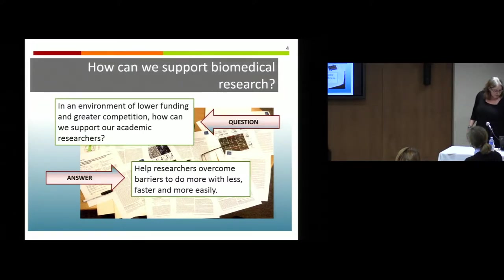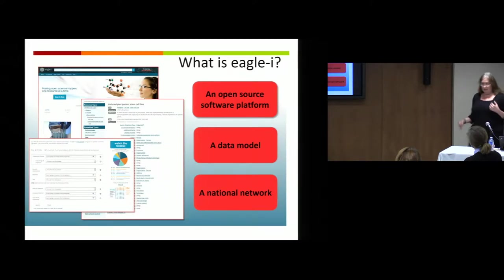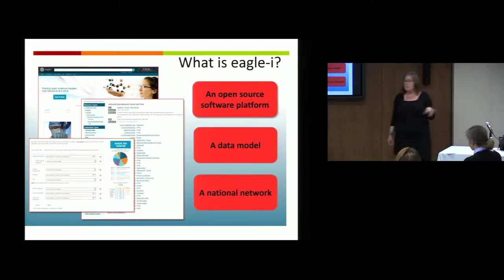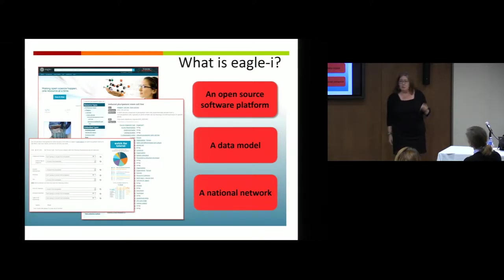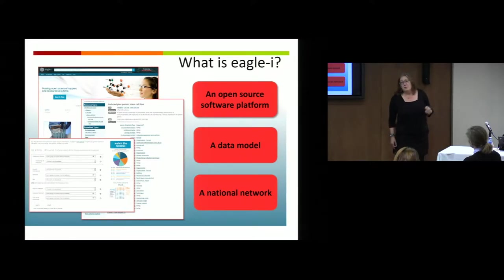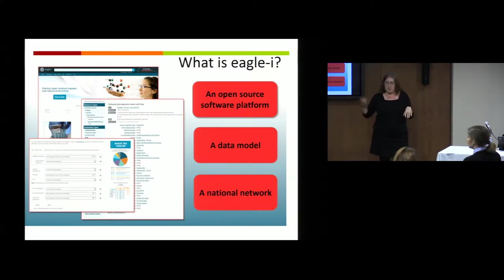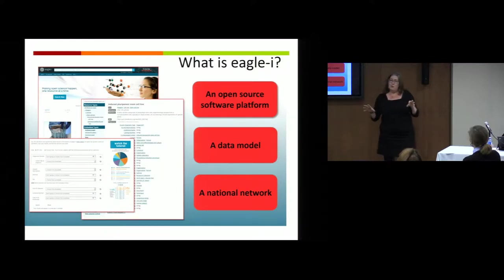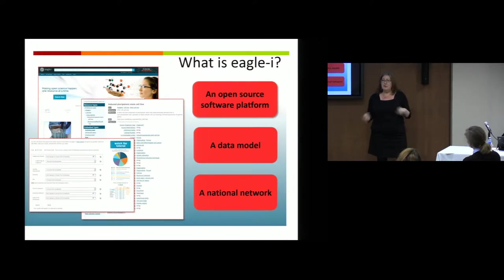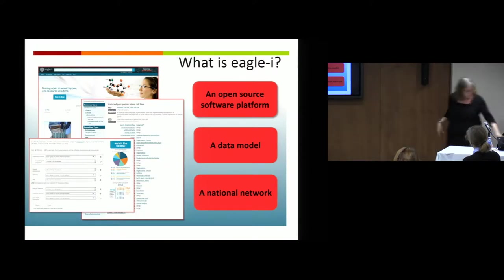Eagle Eye was created through grants. It's an open source platform — completely open source, you can build one yourself. It's a data model, completely ontology-controlled, and all of our resources are ontology-controlled. It's a national network, which means it is a node-based distributed network. In addition to Harvard nodes, 38 other institutions have their own node. They control their nodes and put their stuff in it, but there's a central search that accesses all of them, so you can find anything across the nodes even though they're individually controlled.